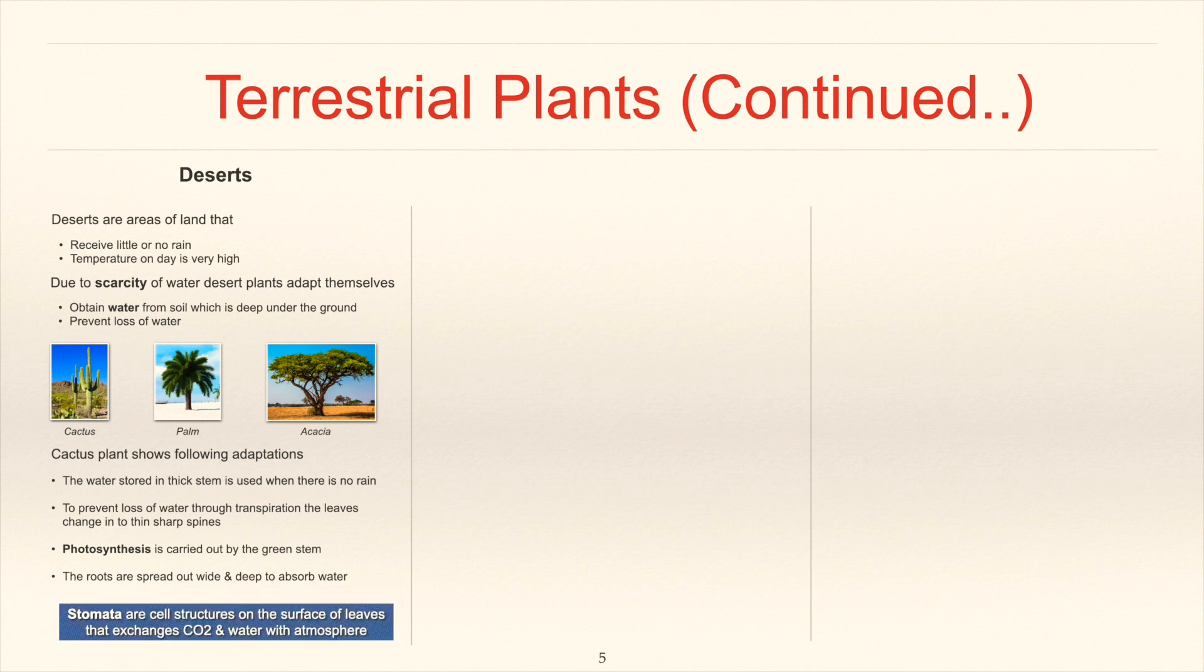Stomata are cell structures on the surface of leaves that exchange carbon dioxide and water with atmosphere.